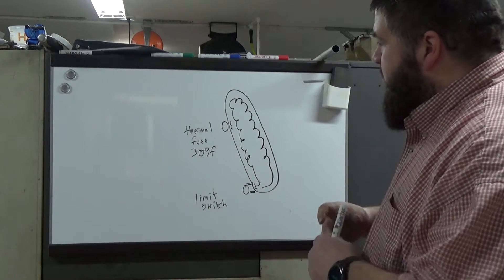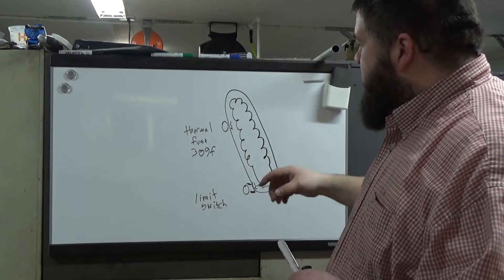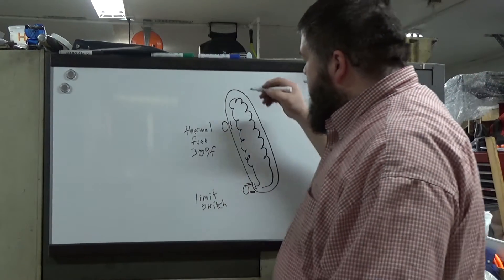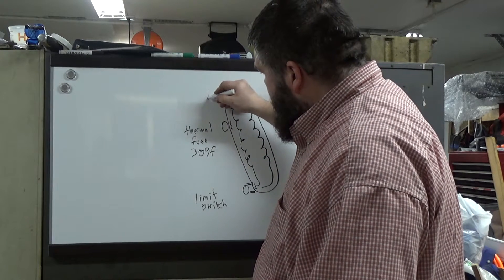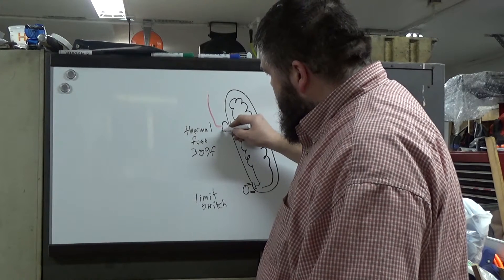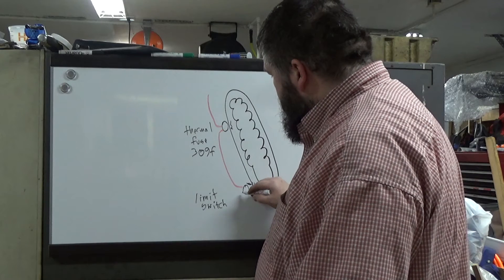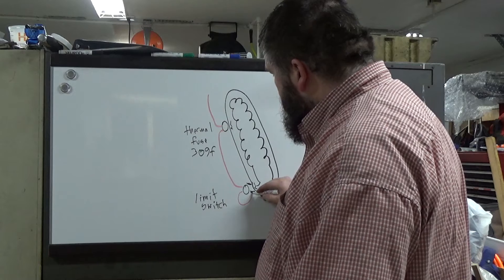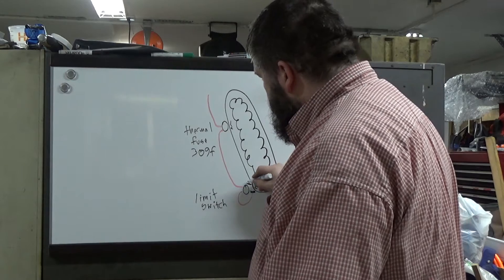The problem that he had with this dryer is that it would run but it wouldn't get hot. The way that they wire up the dryer is they have power coming into this thermal fuse, power coming out of the thermal fuse to the limit switch. And then the limit switch actually feeds power to the heating element. And then from the heating element, they have a return.